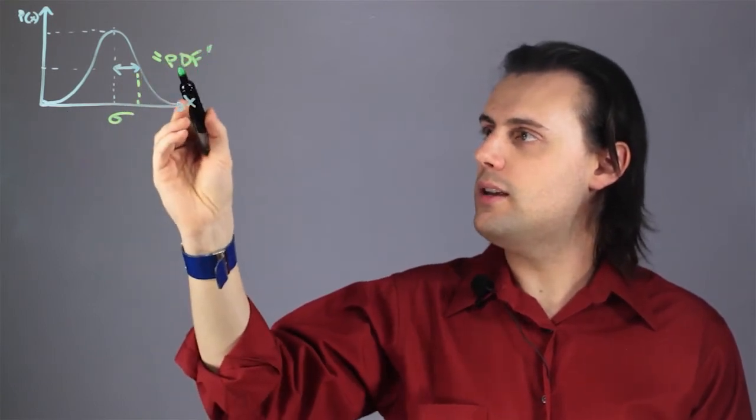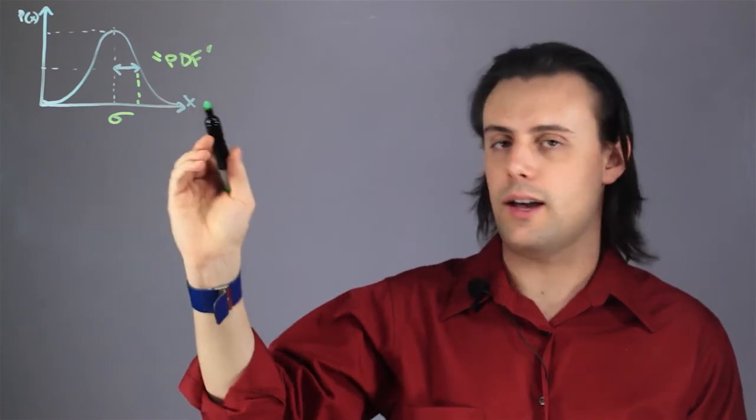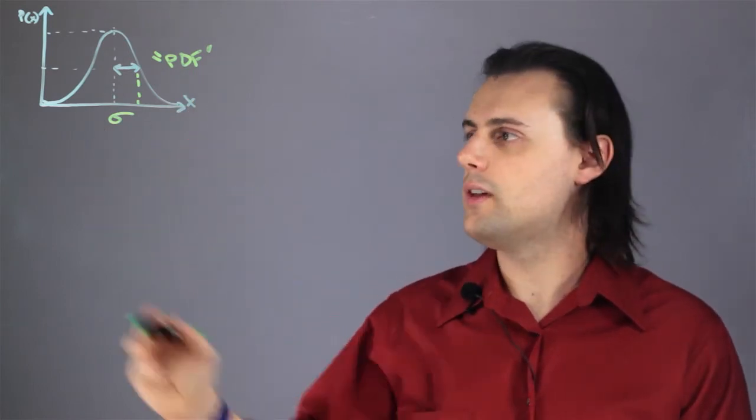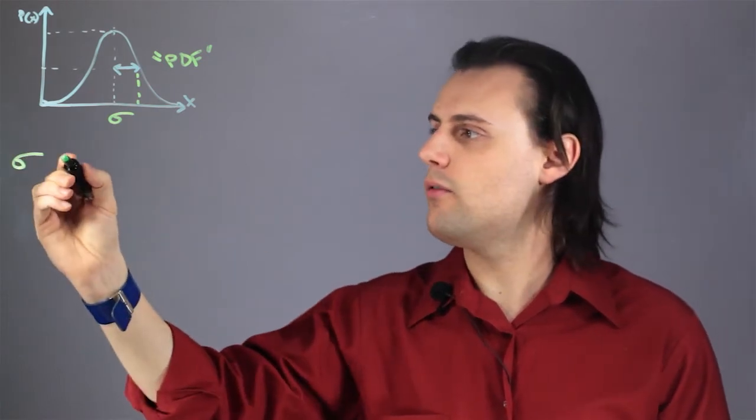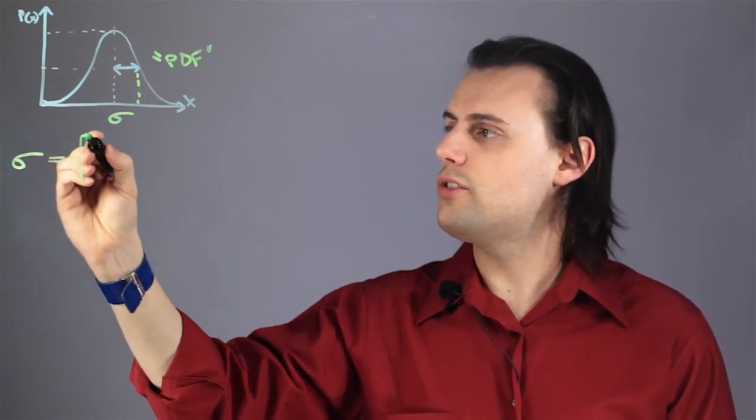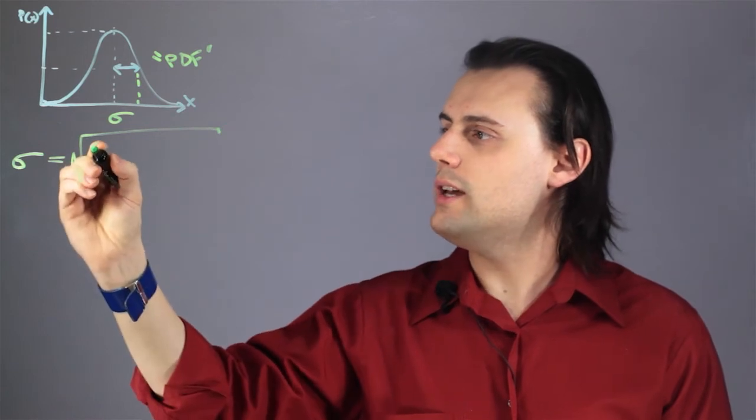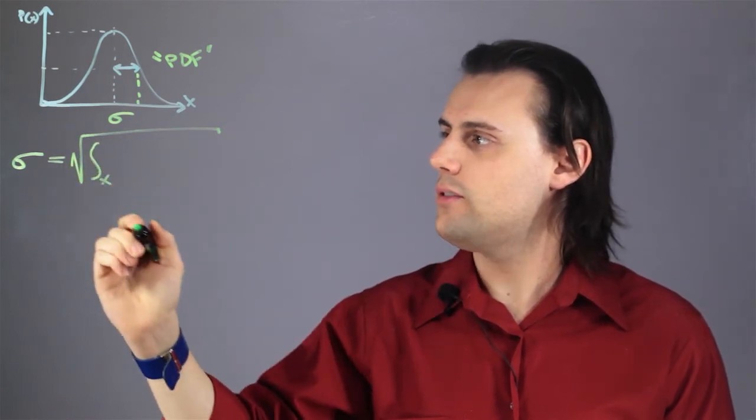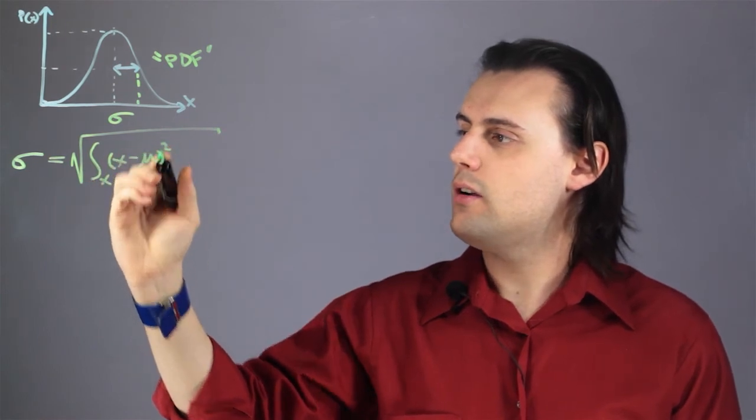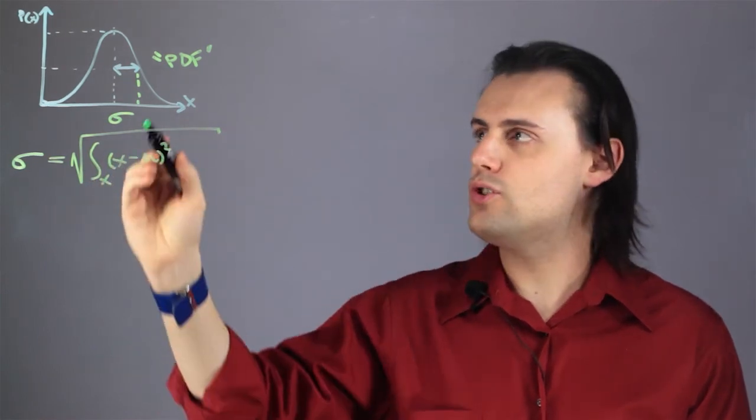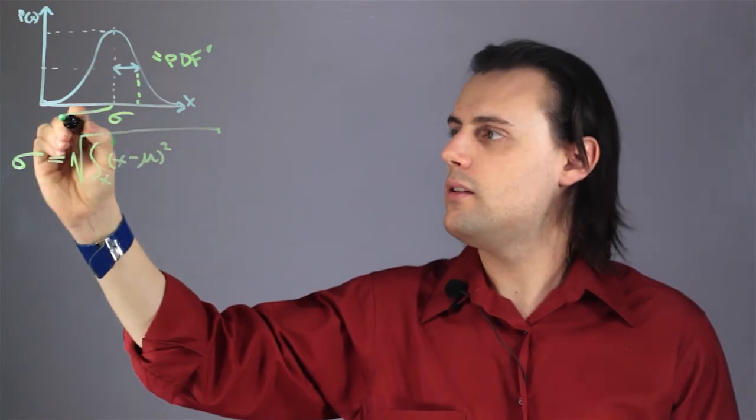And it's a probability density function in terms of x, our random variable. So, the definition for the standard deviation will be equal to the square root of the integral over x of x minus mu squared, where mu is the average or mean.